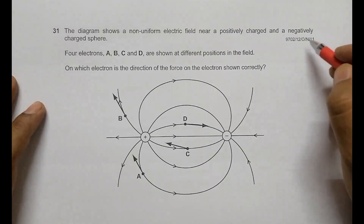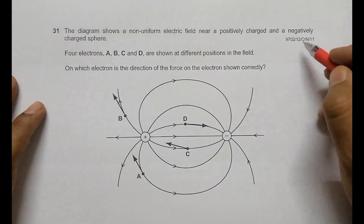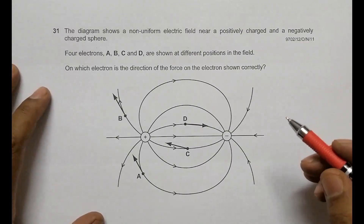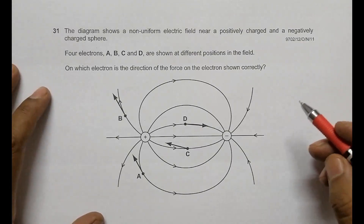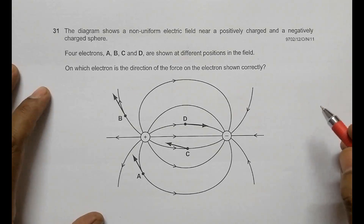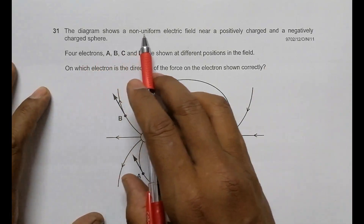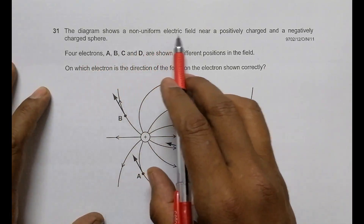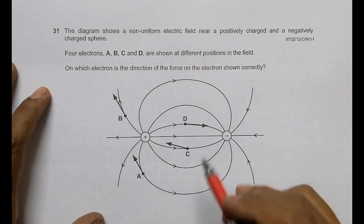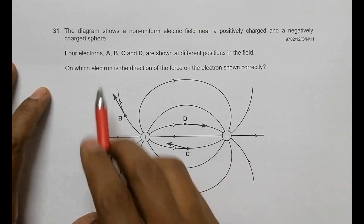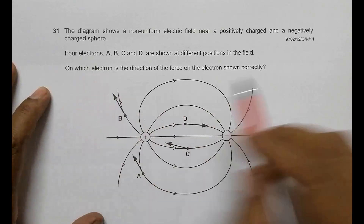This is the 2011 October/November Paper 1, Question 31. This topic concerns the chapter on electric fields. The diagram shows a non-uniform electric field near a positively charged sphere and a negatively charged sphere.